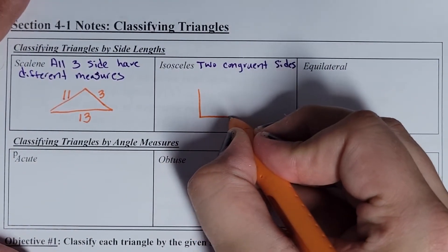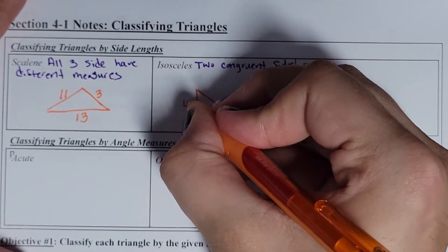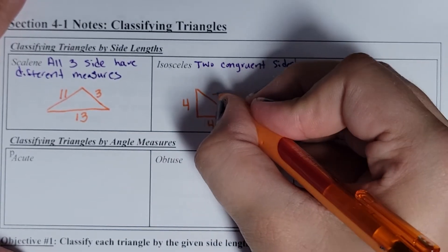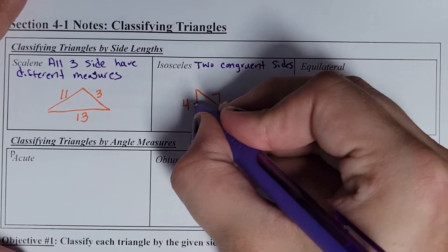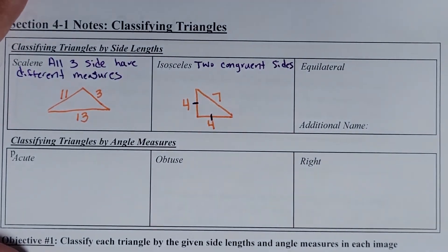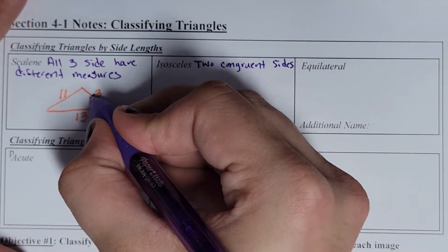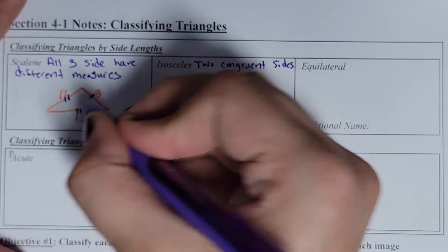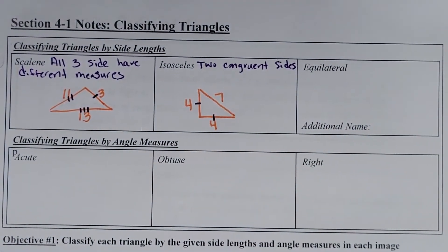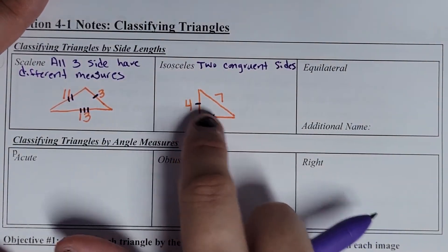I'm going to draw a picture and put some numbers here — maybe we'll call this 4, 4, and this could be 7. When something is congruent, we're going to put a little tick mark on those sides. Since they each have one mark, that's our way of representing that those two things have to be equal. Different numbers of tick marks indicate different measurements, so sides with the same number of tick marks are congruent.